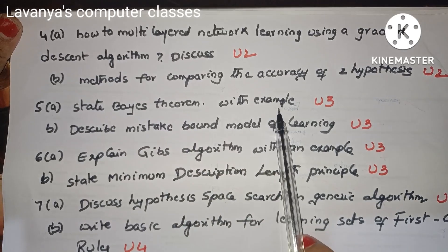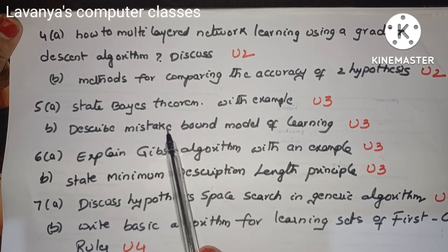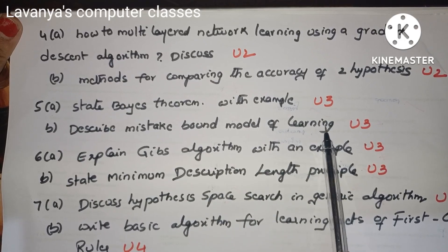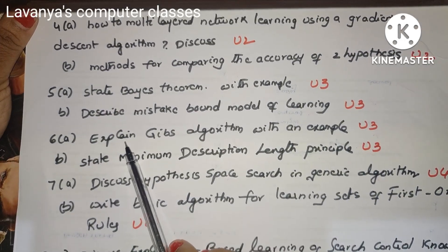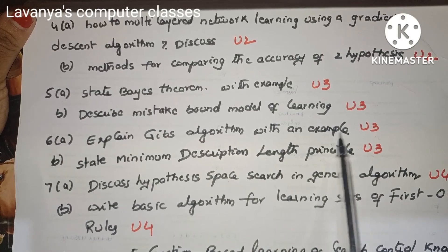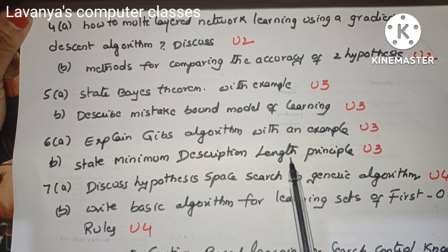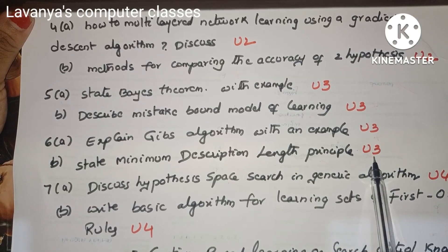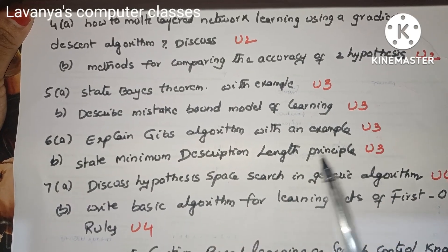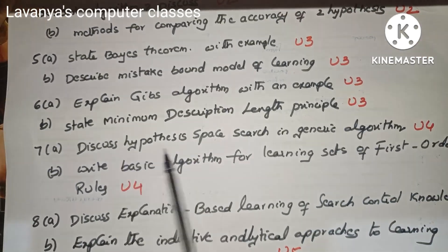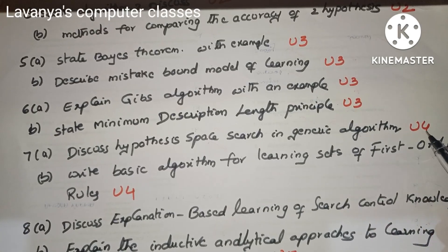Question 5(a) is 'Explain Bayes' theorem with an example' — from Unit 3. Question 5(b) is 'Describe the Mistake Bound model of learning' — also from Unit 3. Question 6(a) is 'Explain Gibbs algorithm with an example' — from Unit 3. Question 6(b) is 'State the Minimum Description Length principle' — also from Unit 3. So questions 5 and 6 are both from Unit 3.